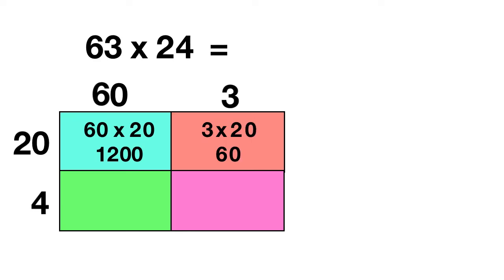Next, we can look to the green box, where we'll multiply 60 times 4. To multiply 60 times 4, you do 6 times 4, which is 24. And add the one zero, 240.